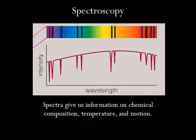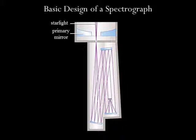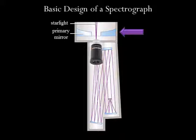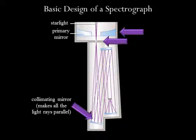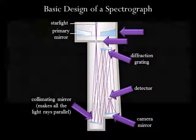We learned about how spectra are used to determine chemical composition, temperature, and motion. Spectroscopy is an important and frequently used tool for the astronomer. Spectroscopy is done with instruments called spectrographs. The spectrograph is attached to the bottom of a reflecting telescope, with light entering through a hole in the primary mirror. A narrow slit at the entrance allows light from the object of interest to pass through. The light strikes a collimating mirror, which makes all the rays parallel, and reflects it to the diffraction grating. The diffraction grating disperses the reflected light into a spectrum. Finally, a camera mirror focuses the spectrum onto the detector.